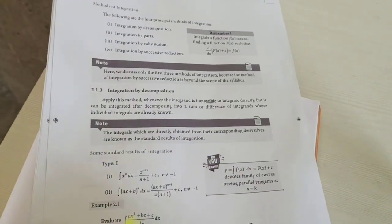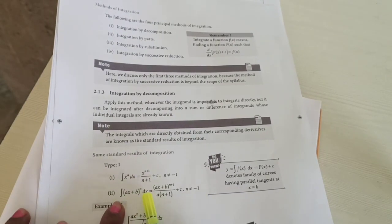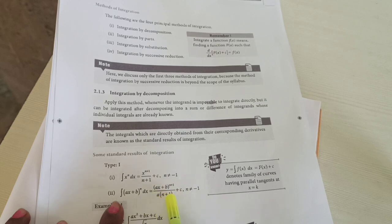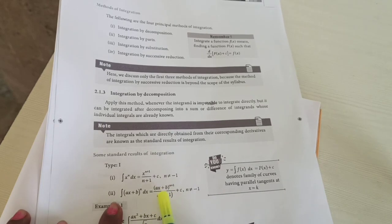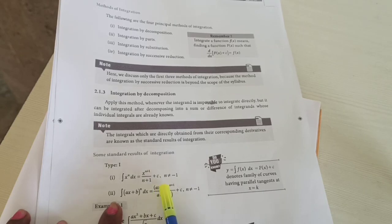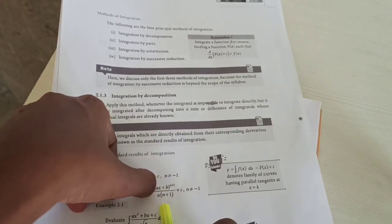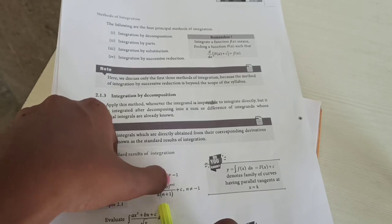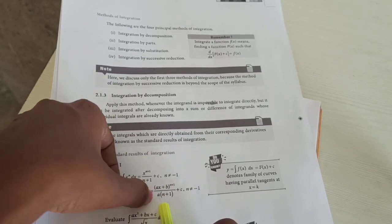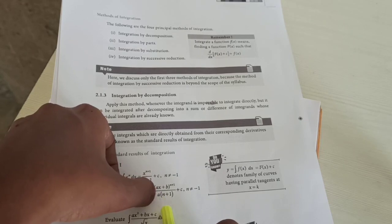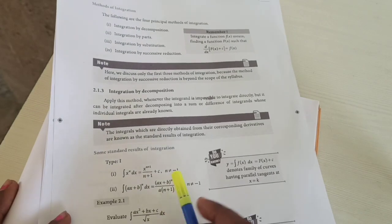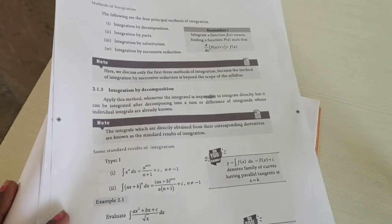The standard formulas are very important. Formula one: the integral of xⁿ dx equals x^(n+1) divided by (n+1) plus c, where n ≠ −1. Formula two: the integral of (ax + b)ⁿ dx equals (ax + b)^(n+1) divided by a(n+1) plus c, where n ≠ −1. If the coefficient a is not 1, we must divide by that number.